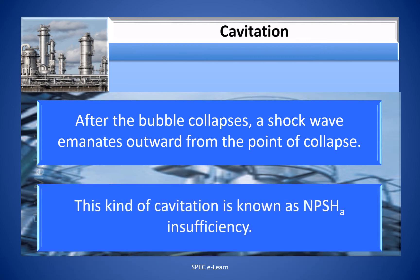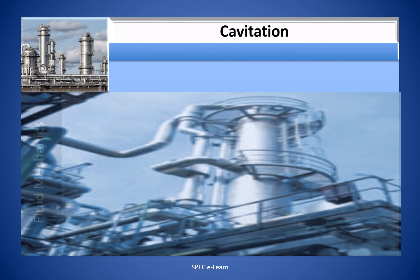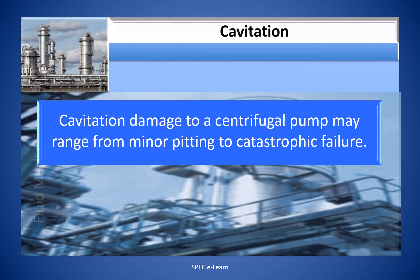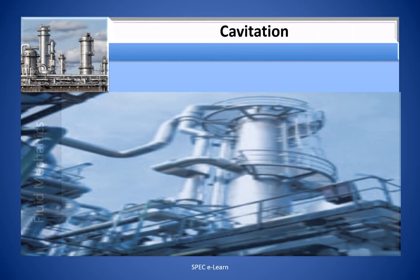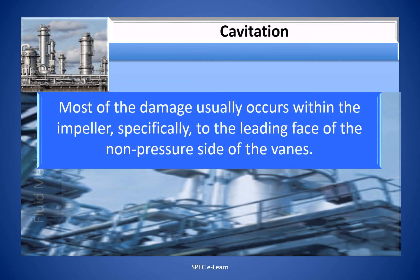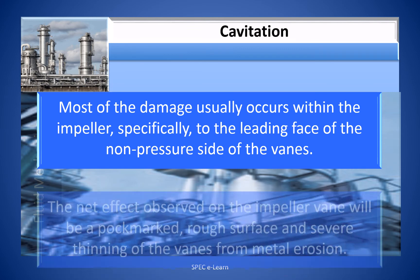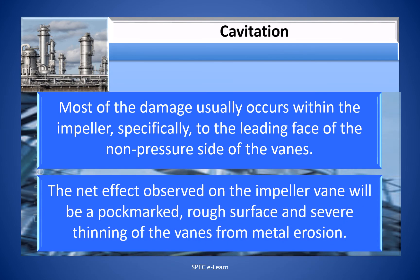Cavitation damage to a centrifugal pump may range from minor pitting to catastrophic failure. The damage depends on the pumped fluid characteristics, energy levels, and duration of the cavitation. Most of the damage usually occurs within the impeller, specifically to the leading face of the non-pressure side of the vanes. The net effect observed on the impeller vane will be a pockmarked, rough surface and severe thinning of the vanes from metal erosion.